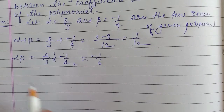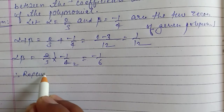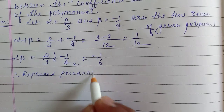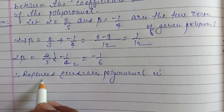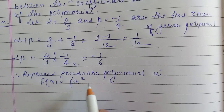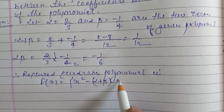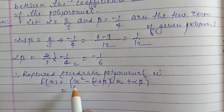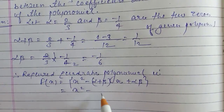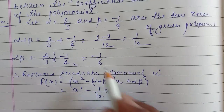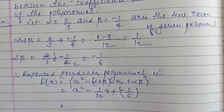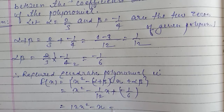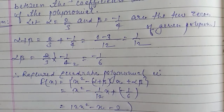Therefore, the required quadratic polynomial is f(x) equal to x squared minus (alpha plus beta) into x plus alpha times beta. Substituting, we get x squared minus (1/12)x plus (minus 1/6). Multiplying through by 12 gives 12x squared minus x minus 2.